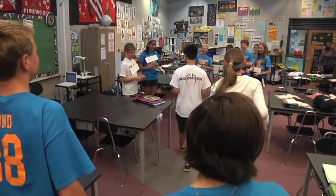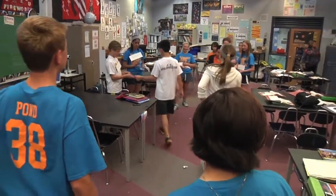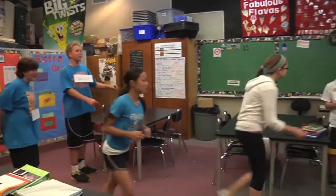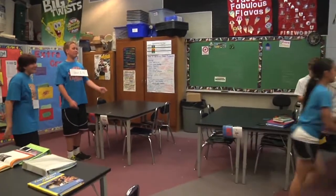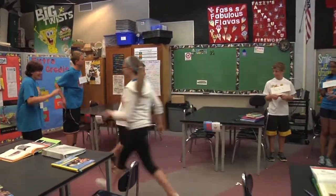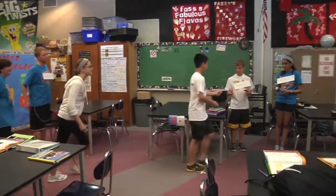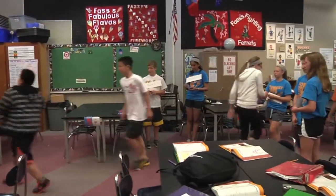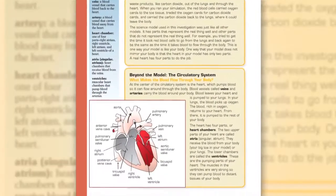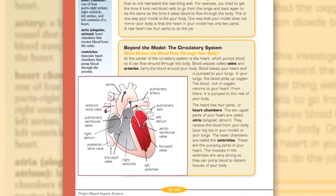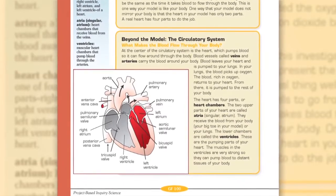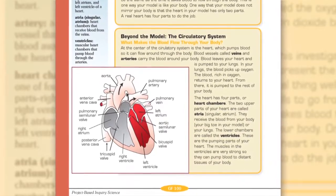Students like this activity because we start off slow, and when we are exercising we speed up, so they're running through the simulation. Then we slow down when they're sleeping, so they can see how the blood really flows through the entire body. Then we read and connect that model to the actual circulatory system.